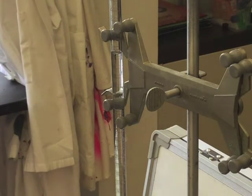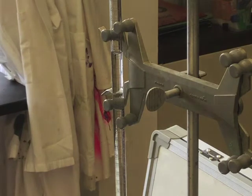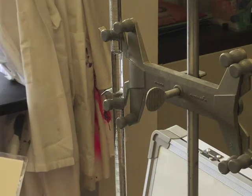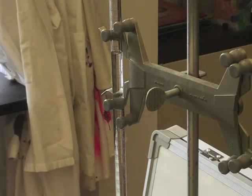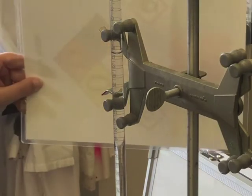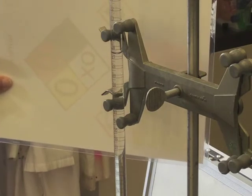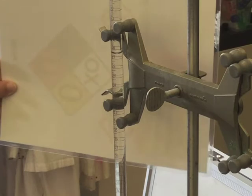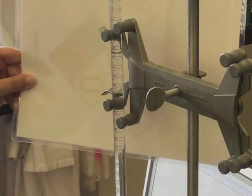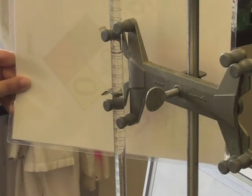The markings on a burette can be difficult to read if you can see the background behind the burette. Sometimes it can be helpful to hold up a piece of paper or a note card behind the burette. If the markings on the burette are in white, you may want to choose a dark paper.